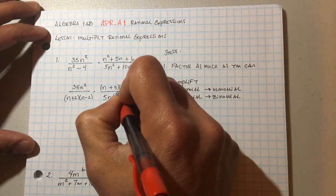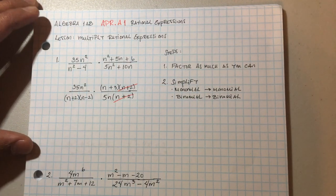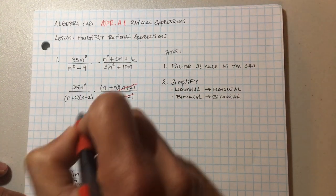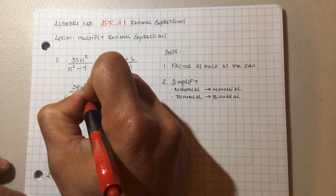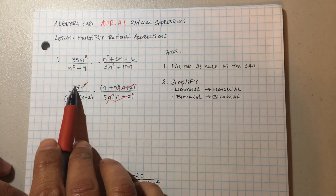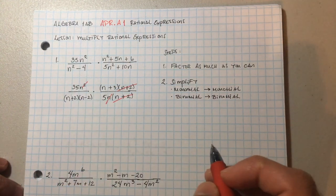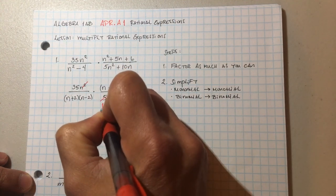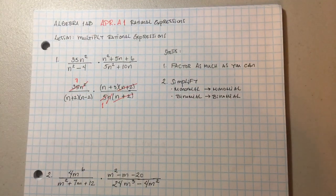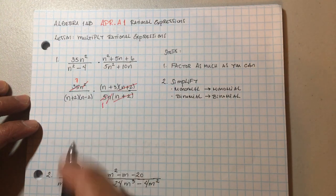The n plus two on the top cancels with the n plus two on the bottom. Now for the monomials: this n cancels out with one of the n's on the top. Then thirty-five and five — five divided by five is one, thirty-five divided by five is seven.